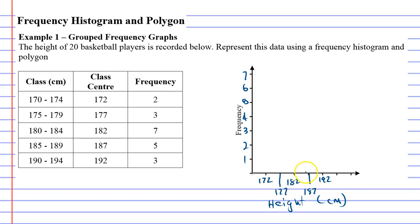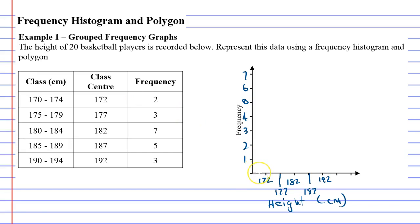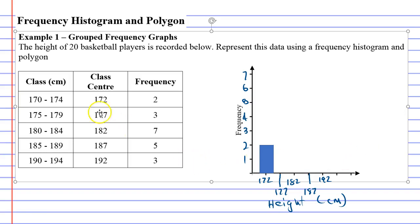Now I'm going to cheat a little bit. I'm going to use the drawing tools because it's really hard for me to do straight lines using the pen here. So we need to start by drawing some bars. And the 172 has a frequency of 2, so we're going to draw this like so. Excellent.